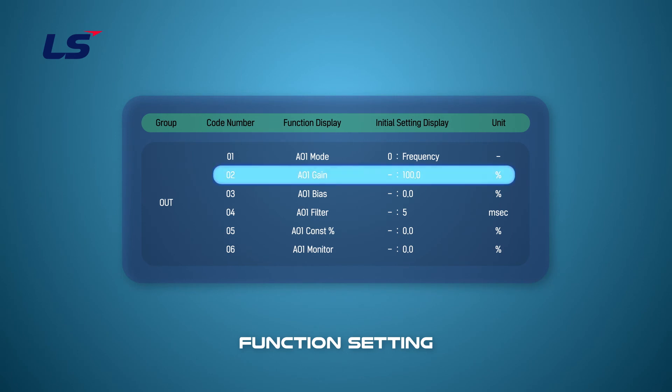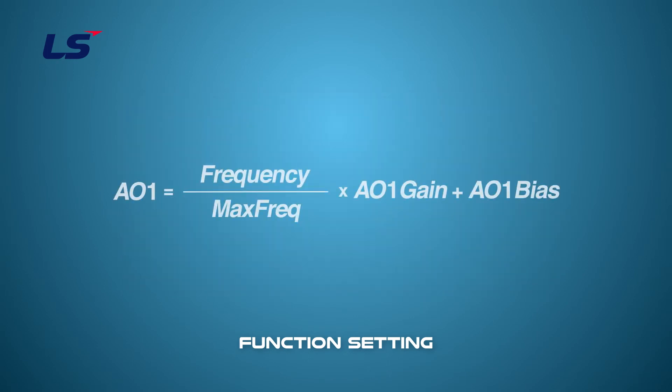In OUT group 2, set the gain value for the analog output. And set the bias value for the analog output in OUT group 3. Gain and bias are reflected in the output as shown on the on-screen formula.